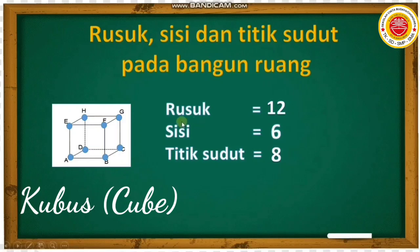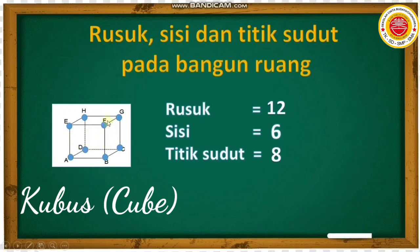Sekarang guru ingatkan lagi ya. Tadi yang dinamakan rusuk itu adalah garis-garis pada bangun ruang, rusuknya berjumlah dua belas. Lalu sisi bangun ruang dari kubus yaitu samping-samping, depannya, belakangnya, atasnya, dan bawahnya berjumlah enam. Lalu titik sudutnya adalah pertemuan antara tiga sisi atau tiga rusuk yang berjumlah delapan.